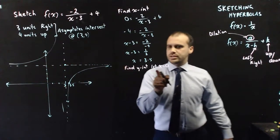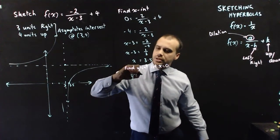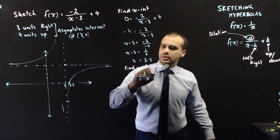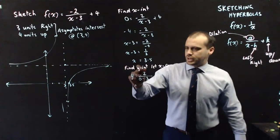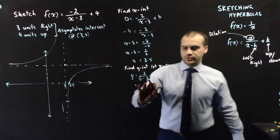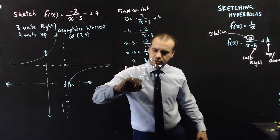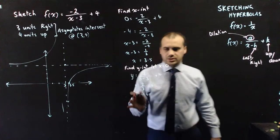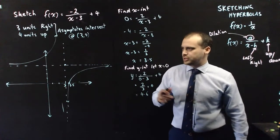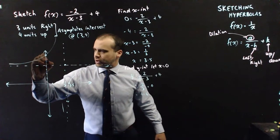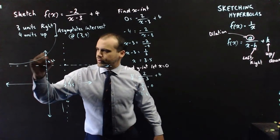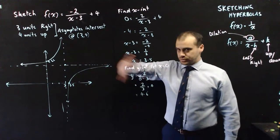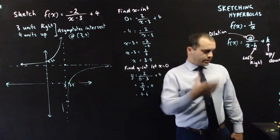This x-intercept value is 3.5, and this asymptote is at 3, so my scale needs tidying up. Now let's find the y-intercept — let x = 0: y = -2/(0 - 3) + 4. So negative 2 over negative 3 is positive 2/3, plus 4. That's 4 and 2 thirds, or approximately 4.6 recurring. That's between 4 and 5, and I'll fix my sketch accordingly. That's our equation entirely sketched, done. And that's how you sketch hyperbolas.